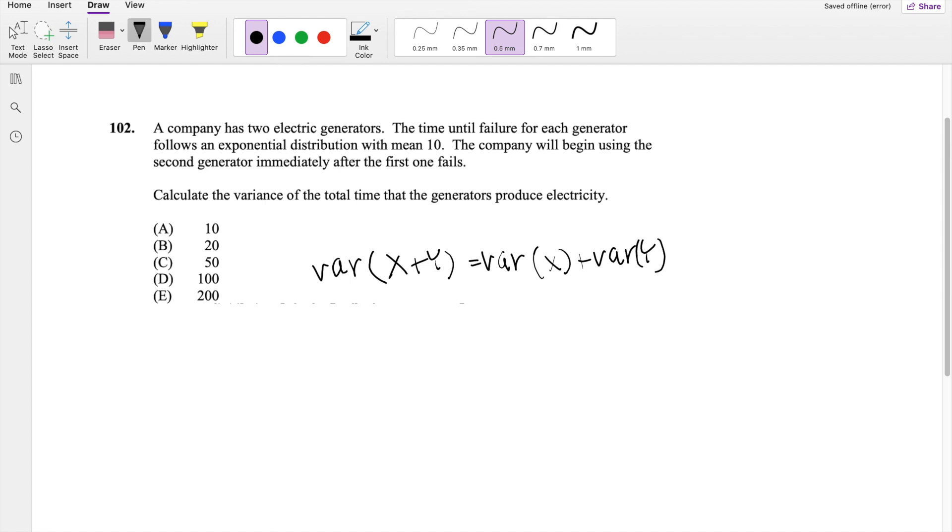And they say that each of these is an exponential distribution with mean equals 10. So that means we know for exponential distribution, variance of X then would be equal to lambda squared. So then this would just be equal to 100. Likewise, X and Y both have the same distribution, so variance of Y would also be 100. So this is essentially just 100 plus 100, which is equal to 200.